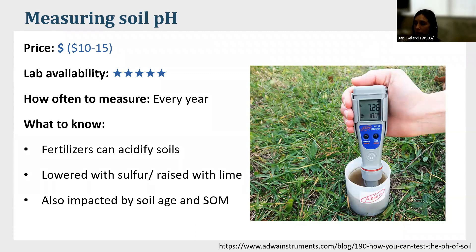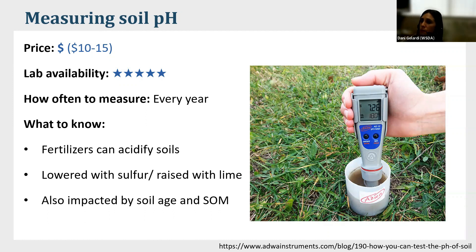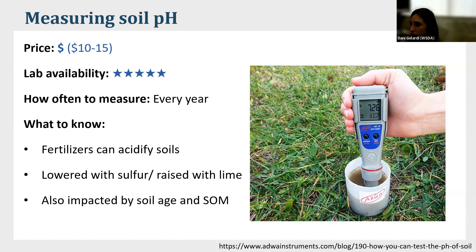In my opinion, pH is one of the most important things to measure, and luckily it is also one of the easiest. Any lab will do it for about ten dollars. You can do it every single year, which is especially important because pH can slowly creep over time — fertilizers can acidify soil and pH changes with organic matter content. If there is an issue with pH, there are management practices which can change it — you can lower it with sulfur and raise it with lime. You can also measure it yourself in the field with probes ranging from $30 to $500.